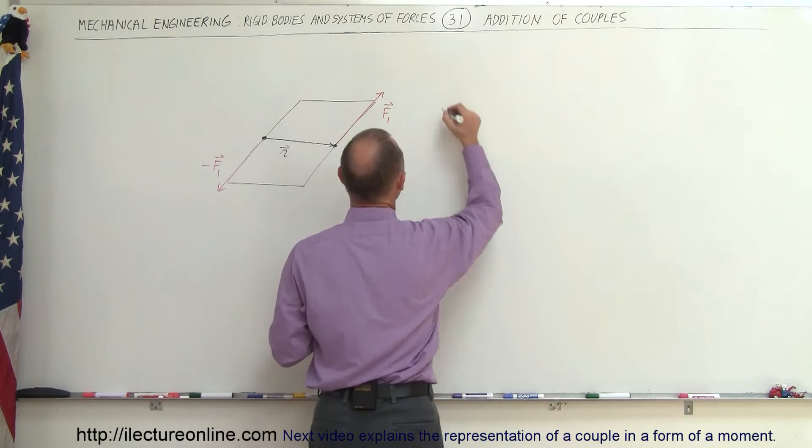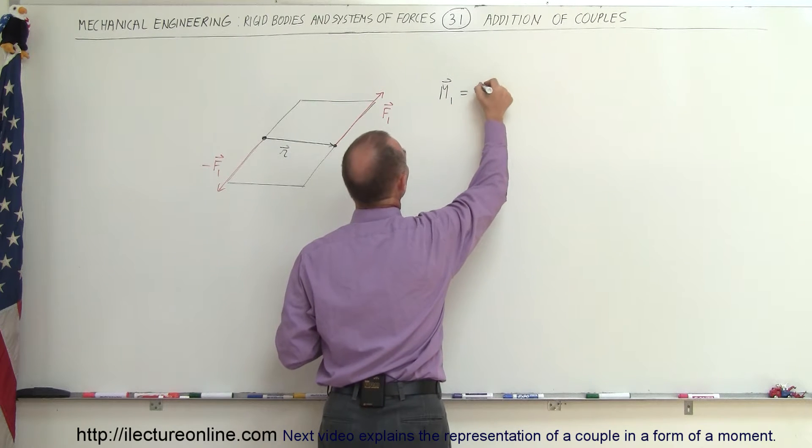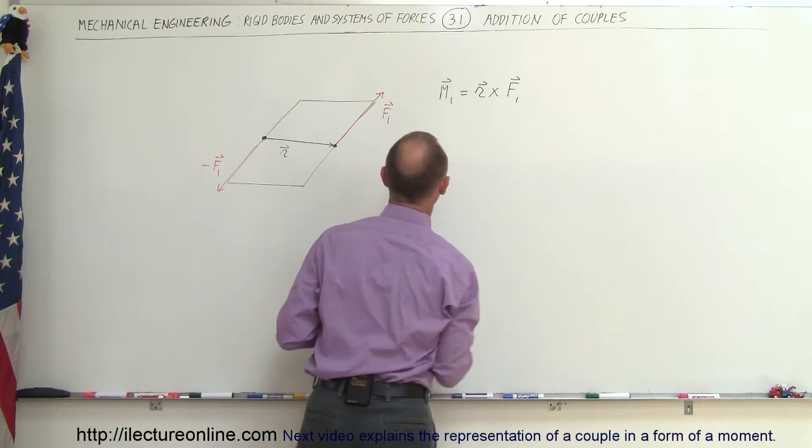Now we can say that the moment caused by this couple, the moment let's call M sub 1, is simply equal to R multiplied via the vector product with F1.